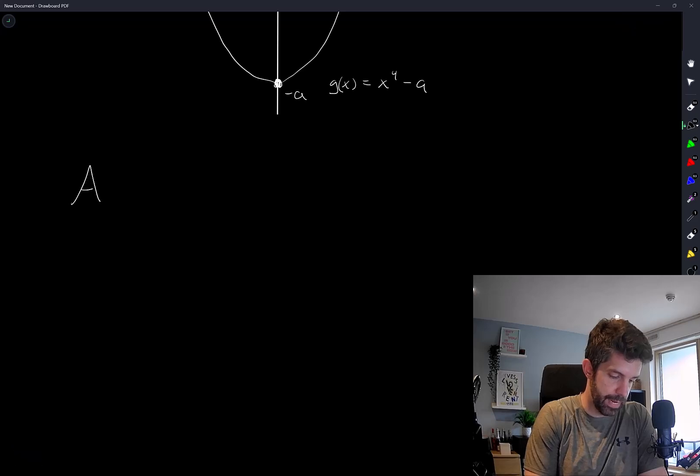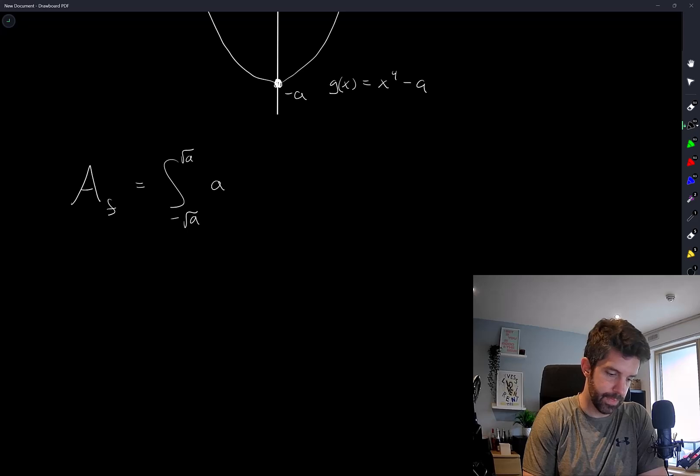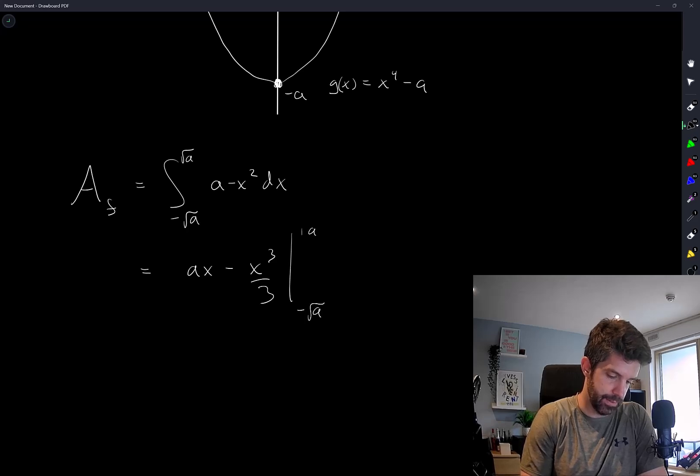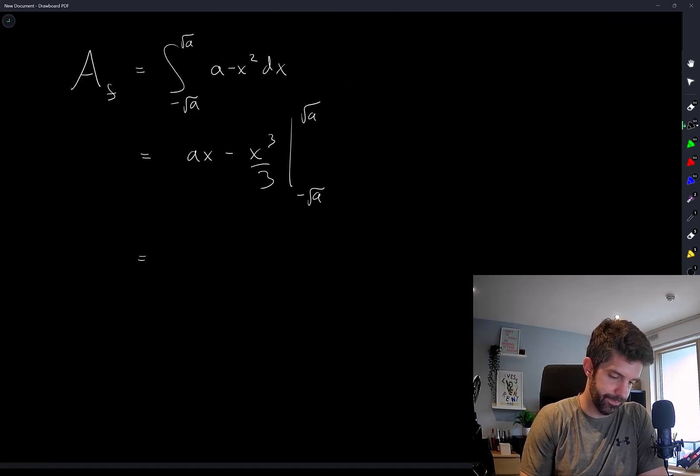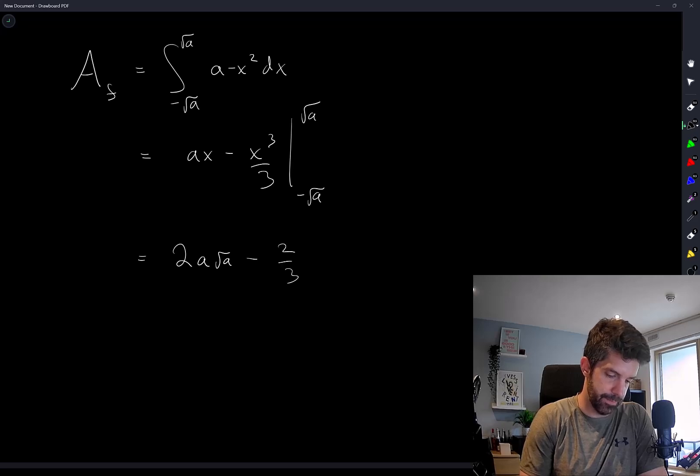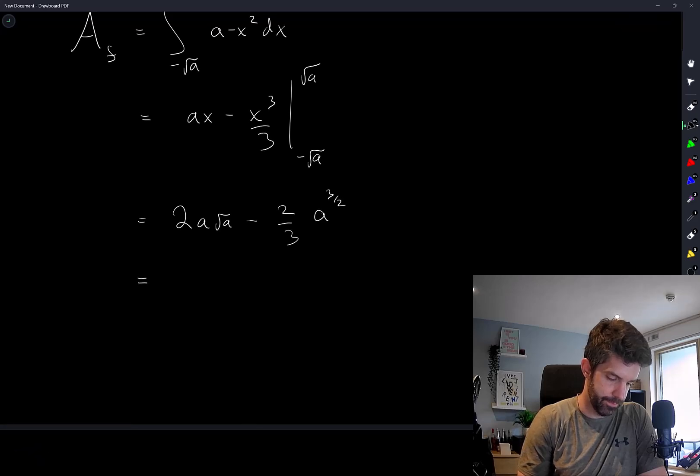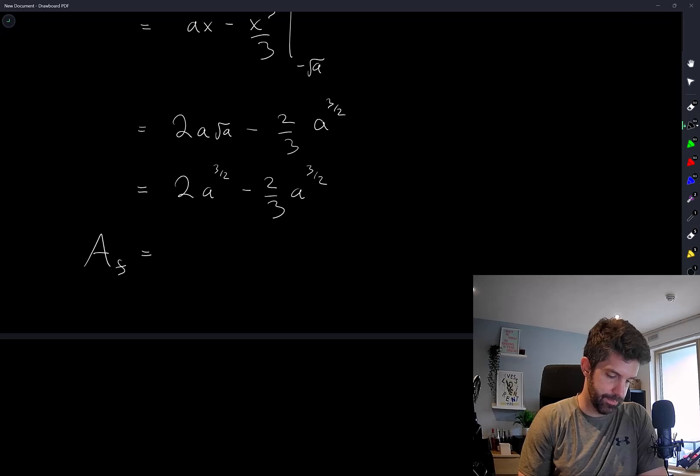So we have two areas. Let's say Af equals the integral from negative root a to root a of a minus x squared dx. So this is ax minus x cubed over 3, evaluated at negative root a and root a. Let's just call this 2a root a minus 2 over 3 a to the 3 over 2. So Af is 4 over 3 a to the 3 over 2.